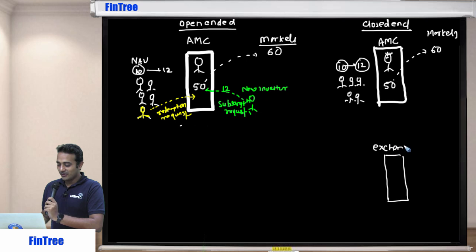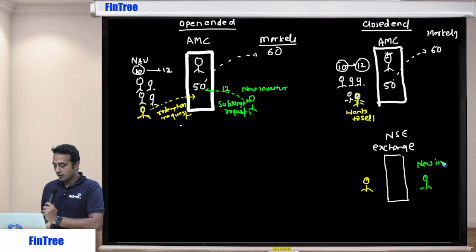Now what is this? This is an exchange - you can think of National Stock Exchange. And this investor here now wants to sell. So in order to be able to sell, now he will have to come here on the exchange. And we have a new investor here who wants to buy.